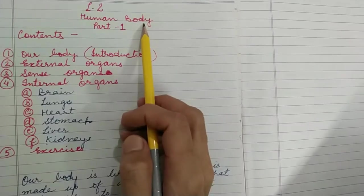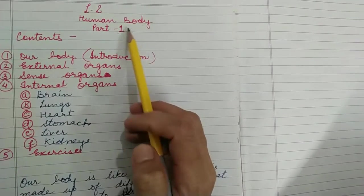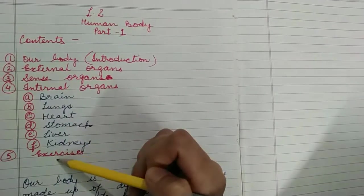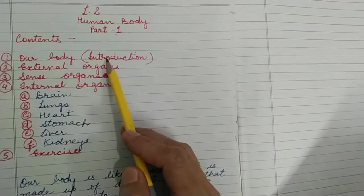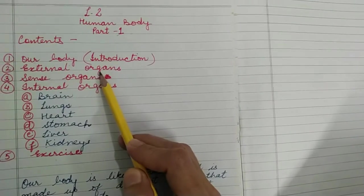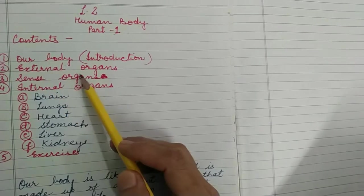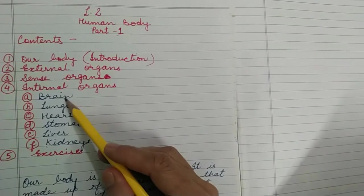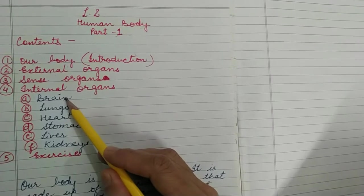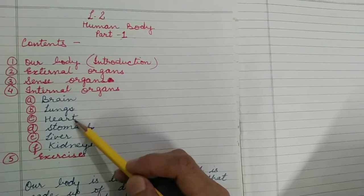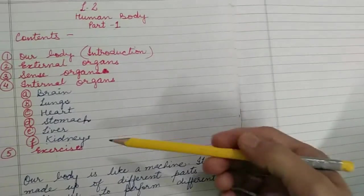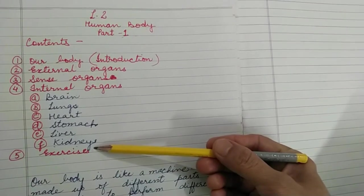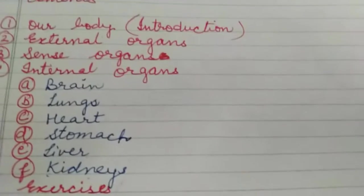Lesson: Human Body, Part One. The contents we will cover in this video are: body introduction, external organs, sense organs, and internal organs. We will read about these organs: brain, lungs, heart, stomach, liver, and kidneys. At last we will do the exercises.